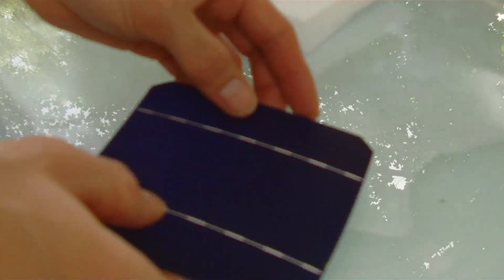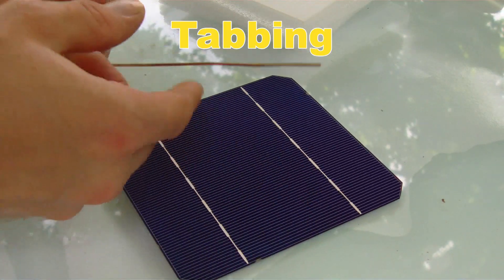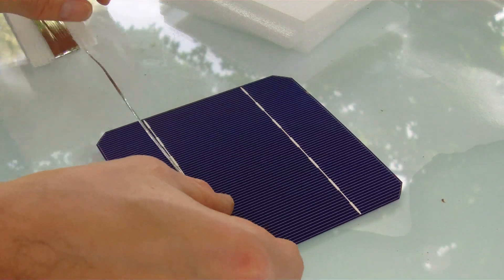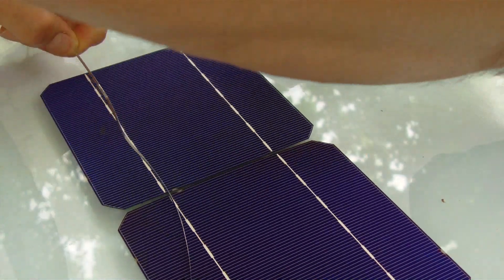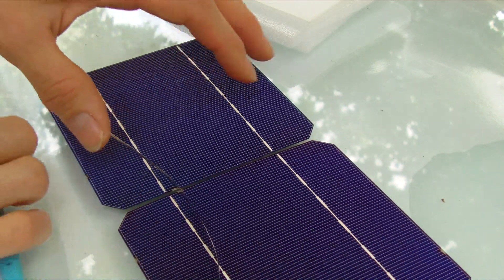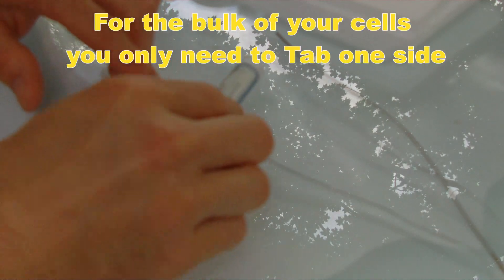All right, so what we're going to do is tap the top. We're going to cut our tabbing wire and make sure that it's double the size of the cell. There's our tabbing, so we'll just cut a couple strips. What I like to do is flatten the wire.